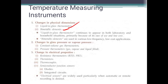On the basis of changes in physical dimensions, we classify the liquid-in-glass thermometer and the bimetallic thermometer. Liquid-in-glass thermometers continue to appear in both laboratory and household situations. Bimetallic elements are mainly used in various low-cost applications.